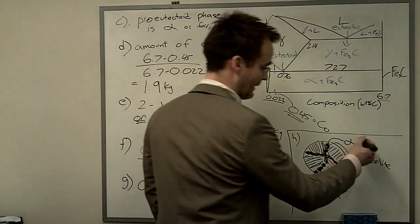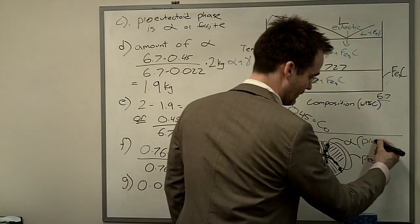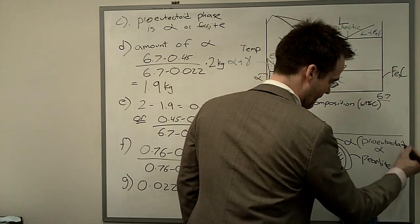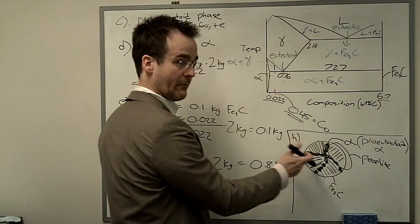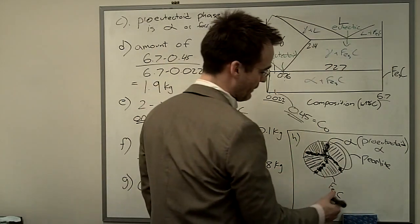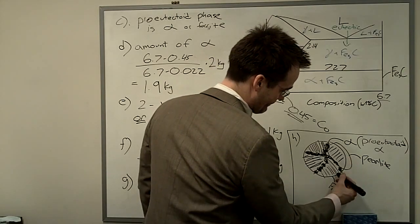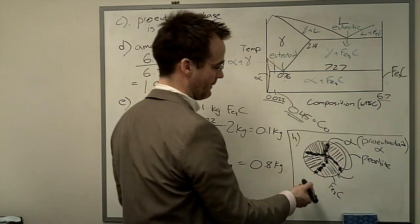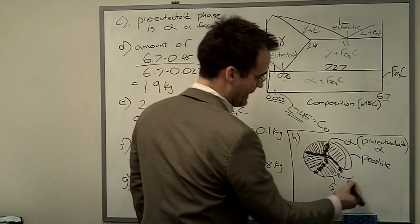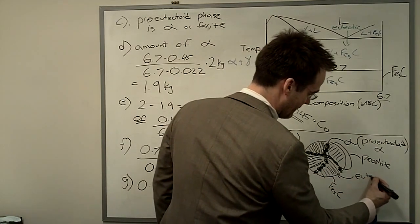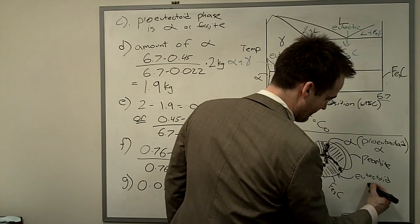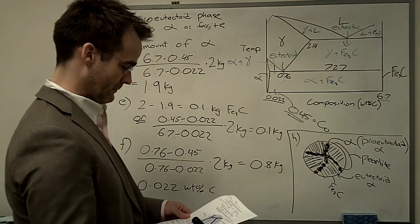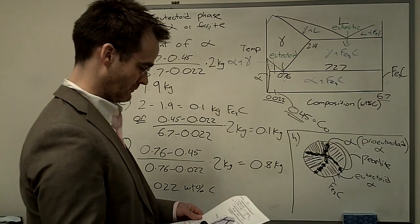If we want to be thorough about it, we can actually call this the pro-eutectoid ferrite that formed along the prior austenite grain boundaries. And then we can say the dark phase in this particular example, just because my marker is black, is going to be the eutectoid ferrite. And the white stuff is just going to be called cementite. And that's it.